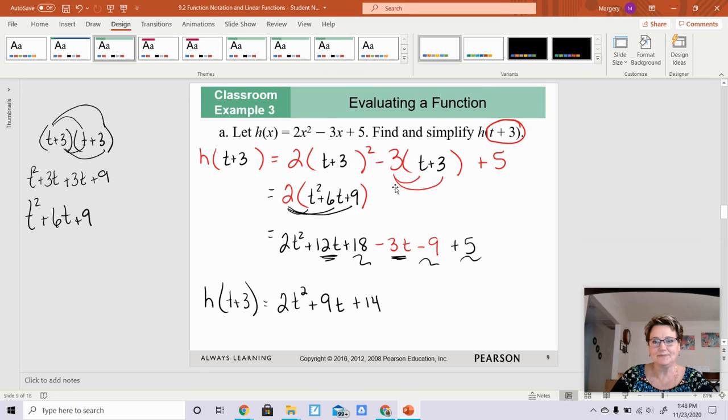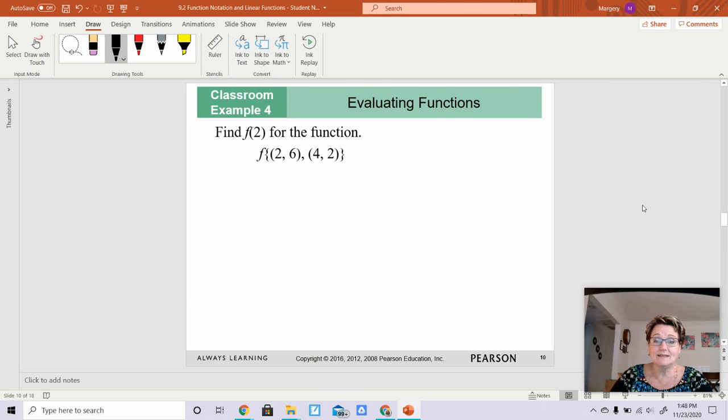Next one. This one wants you to find f(2) for the function. You guys, that is when x is equal to 2. So find f(2). f(2) equals, that means that the x value is 2. You guys, this is xy, and this is xy. Remember, the x value is 2. So the x value is 2 here, which means the y value is 6.